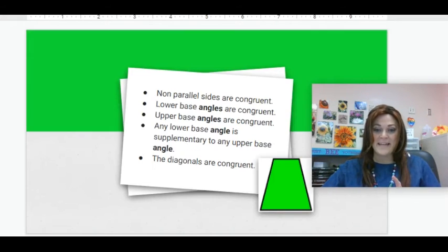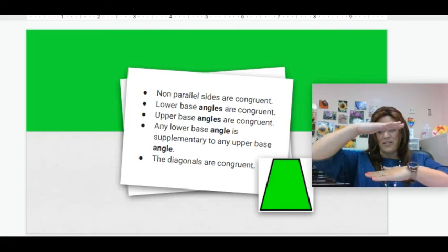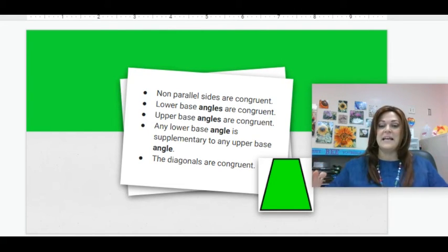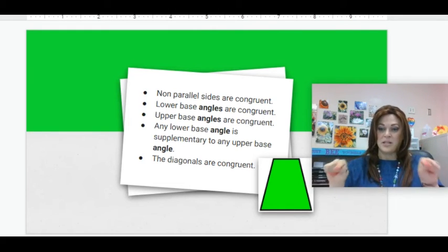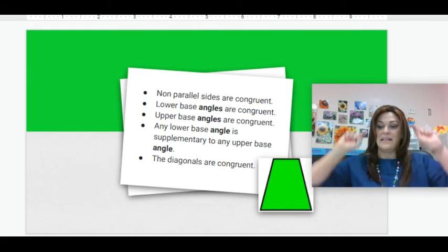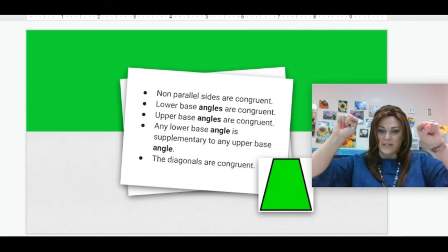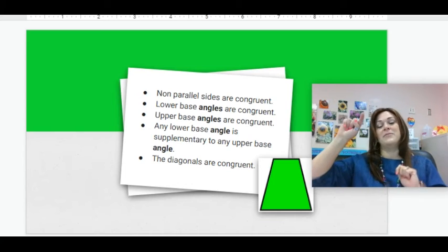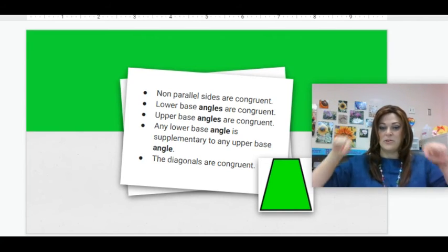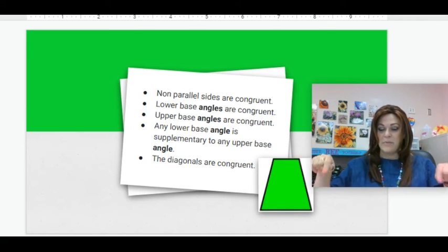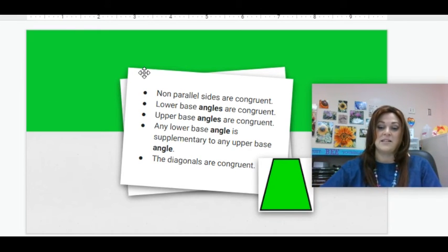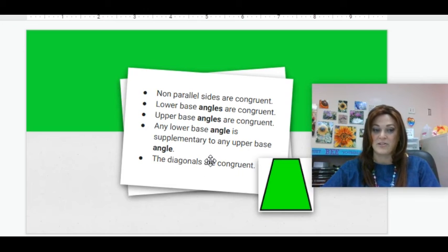So the angles on the lower base, those are congruent. The angles on the upper base, those are congruent. And then when you have the lower and upper, lower and upper angles, those two are supplementary because of the parallel lines. And then if it is an isosceles trapezoid, then the diagonals are congruent, only with an isosceles trapezoid.